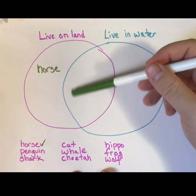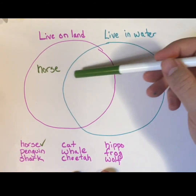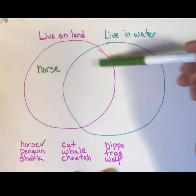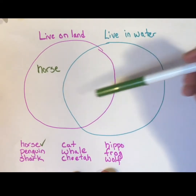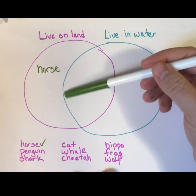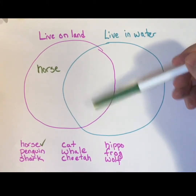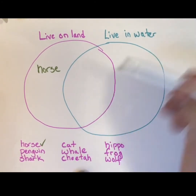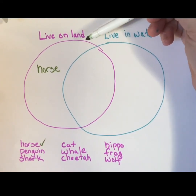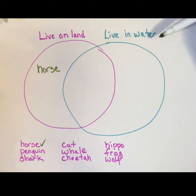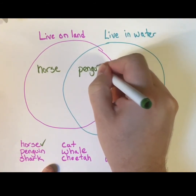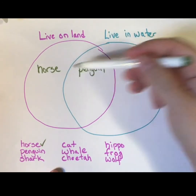Notice that I didn't put it in the middle area, because the middle area is inside both circles — it's inside the blue 'live in water' circle and the pink 'live on land' circle. So any animal that goes in this middle space has to be something that lives in both. Let's look at an animal that lives in both — how about penguin? Penguins definitely live on land, they spend part of their time on land, but they're sure at home in the water too. So penguins go in the middle section because they are both things.